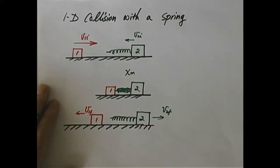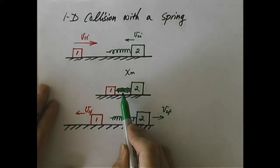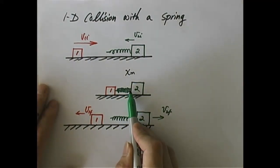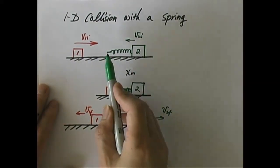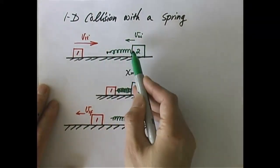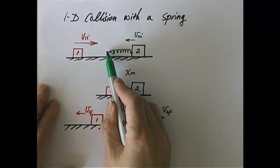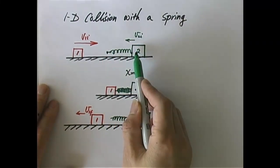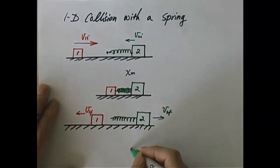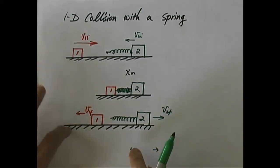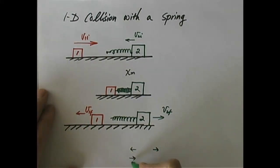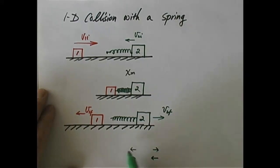Let's look at what happens when the spring gets compressed. The spring has a head and a tail, and these points can both move. If they move in opposite directions, the spring gets longer. If they're moving toward each other, the spring gets compressed.